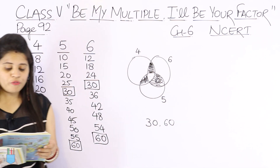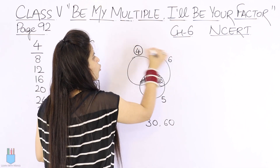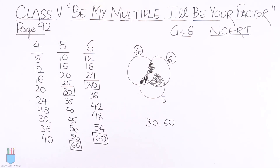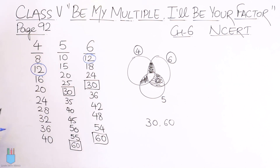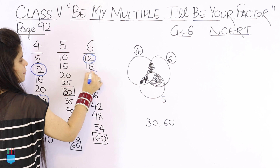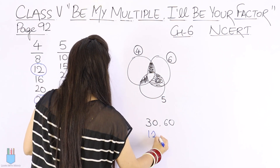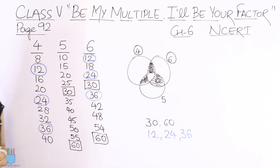Next: what common multiples of 4 and 6 are written in the orange part? The orange part is for 4 and 6. Looking at the multiples of 4 and 6: 12 is in both. 24 is also in both. Then we have 36 on both sides. So the common multiples of 4 and 6 are: 12, 24, and 36.